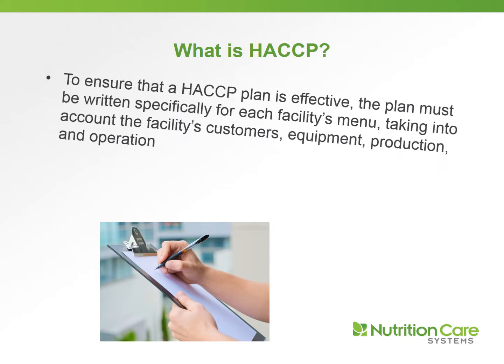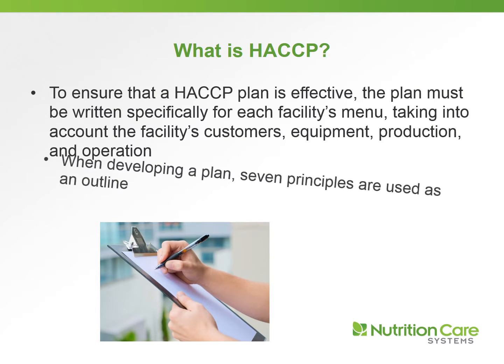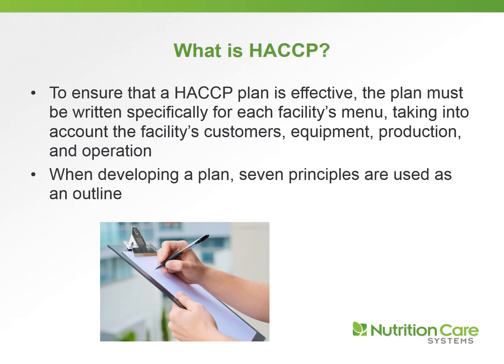To ensure that a HACCP plan is effective, the plan has to be written specifically for each facility's menu, taking into account the facility's customers, equipment, production, and operation. When developing a plan, seven principles are used as an outline.